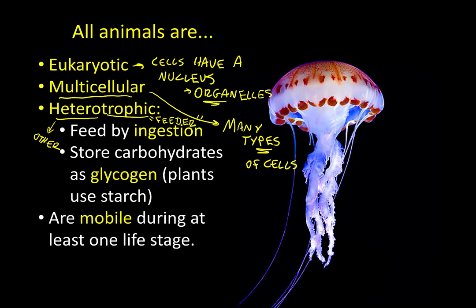The opposite of heterotrophic is not homotrophic — instead, it's autotrophic. The word homotrophic would actually translate to 'same feeder,' which sounds like cannibalism. Autotrophs don't consume other organisms for energy; they make their own energy molecules. 'Auto' means self — these are self-feeders. This refers mostly to plants and photosynthetic microorganisms like algae. But to be an animal, you've got to be a heterotroph.